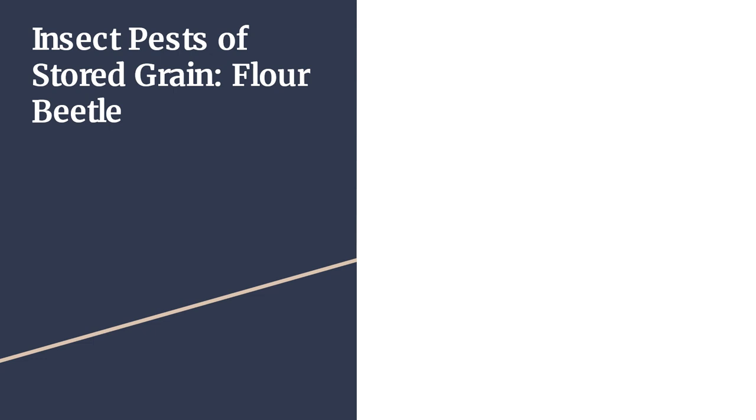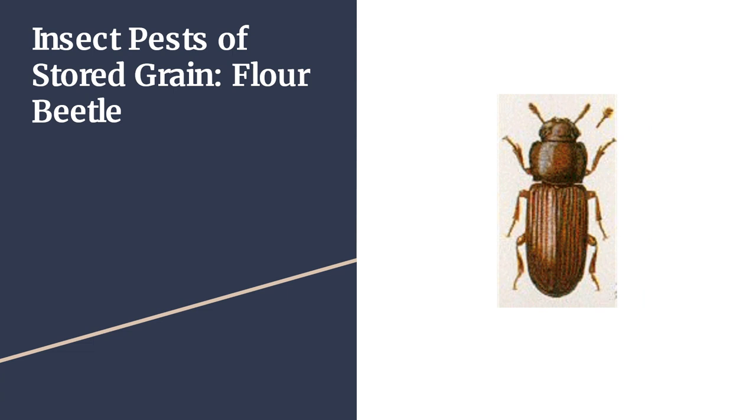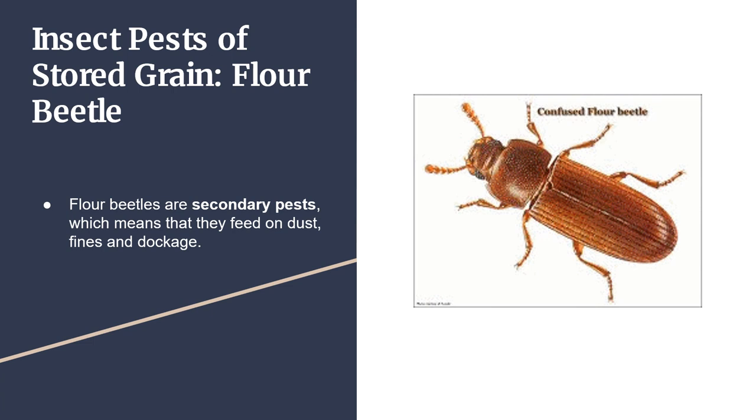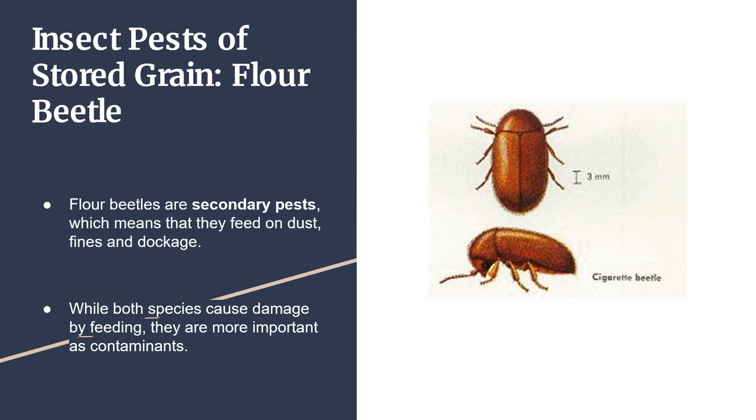Insect Pests of Stored Grains: Flower Beetle. Flower beetles are secondary pests, which means they feed on dust, fines, and dockage. While both species cause damage by feeding, they are more important as contaminants.